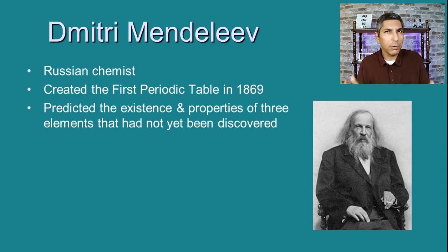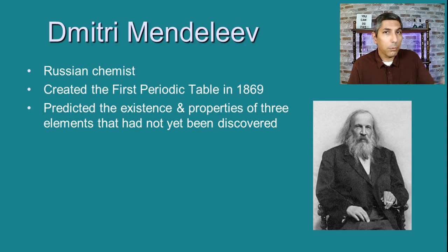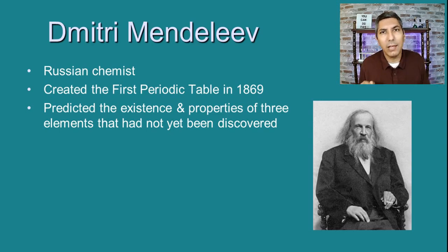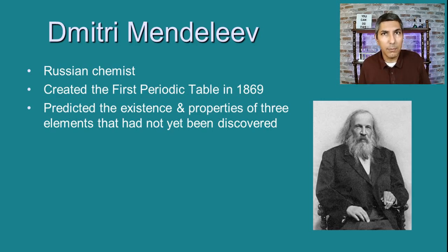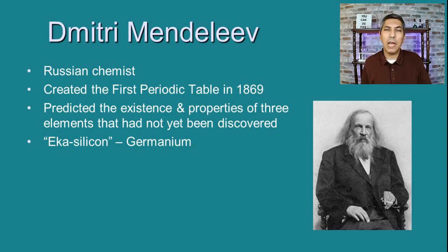This is kind of similar to if you're playing cards with a deck and perhaps three of the cards have been removed. If you play long enough, you'll find that cards are missing — there might only be three aces or three twos — but eventually you can figure out which cards are missing based upon the patterns in the deck. That's kind of what Mendeleev did: he was able to determine that three elements in his periodic table were missing.